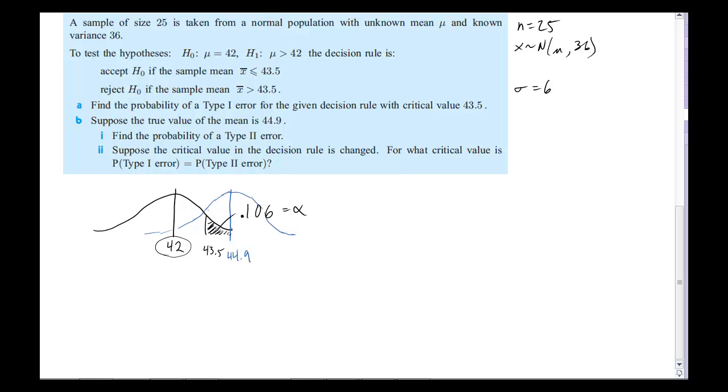So we already rejected the null hypothesis for anything bigger than 43.5, which means we've already taken care of all this. But there's a chance I got a value less than that, in which case I would accept this hypothesis when actually it's not true. It's something larger than 42. So this green section is what I need to look for to find β, the probability of a Type 2 error.